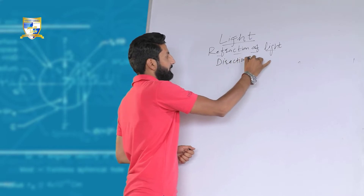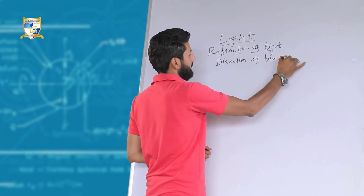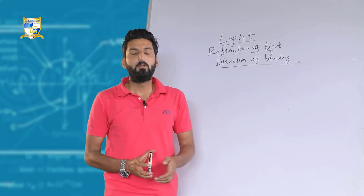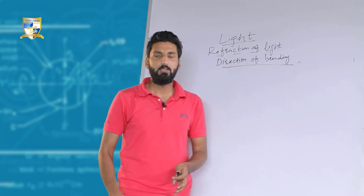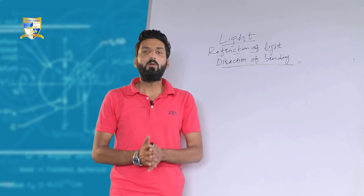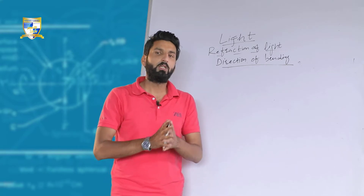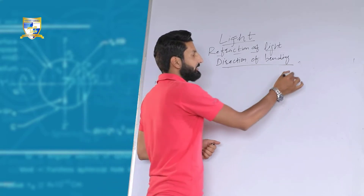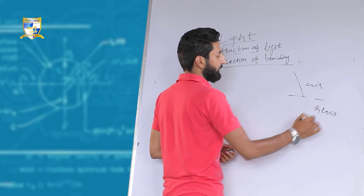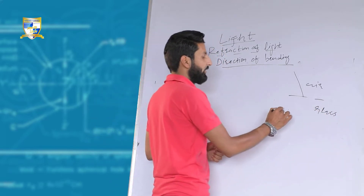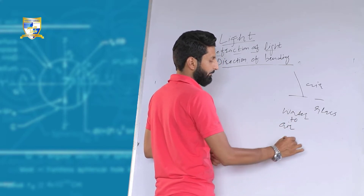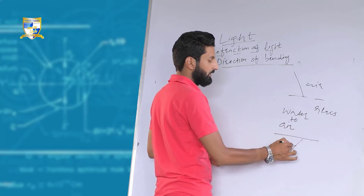Regarding the direction of bending of light, we have two types of media: first is the optically rarer medium and the other is the optically denser medium. If a ray of light is traveling from an optically rarer medium to an optically denser medium — for example, light traveling from air entering into glass — or sometimes light may travel from water to air.